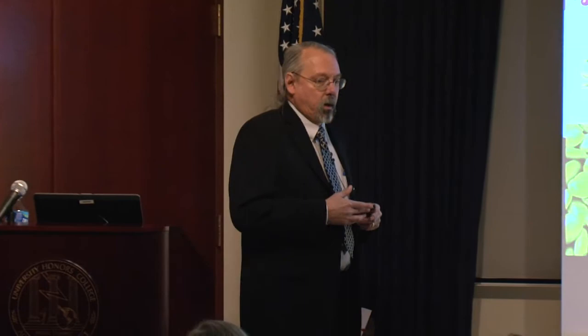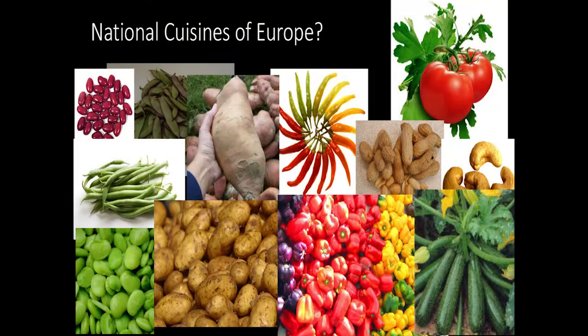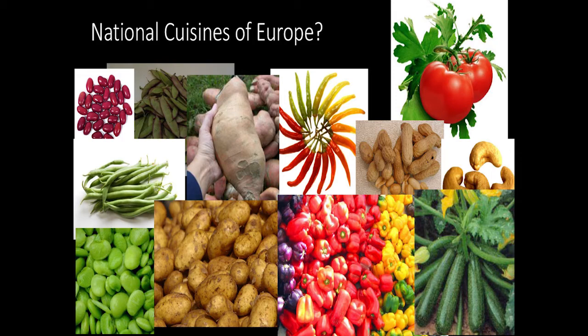I'll borrow from anthropologist Jack Weatherford for the first part. Dr. Weatherford is also a distant descendant of Creek chief William Weatherford. Let's look at the national cuisines of Europe, none of which could exist without the introduction of hundreds of plants domesticated by Native Americans — broadly referring to all the peoples of the Western Hemisphere: North America, Middle America, and South America. Virtually all the varieties of beans commonly eaten today came from the Americas, as did all the sweet and hot peppers, all the potatoes including sweet potatoes, most of the world's squashes including pumpkins, peanuts and cashews, and the absolutely essential tomato.